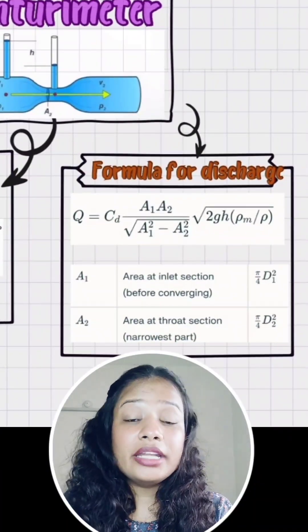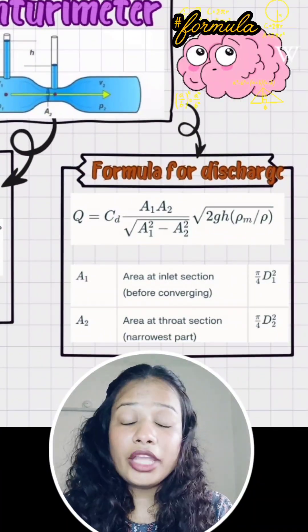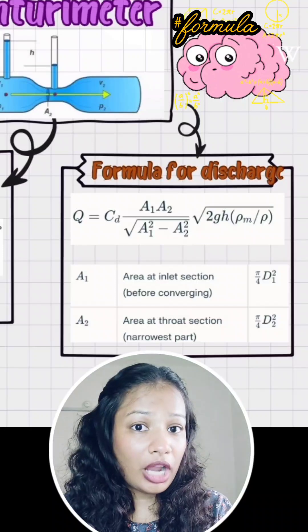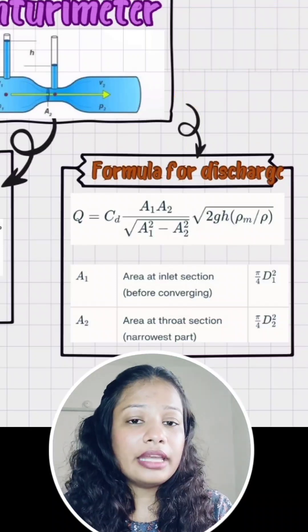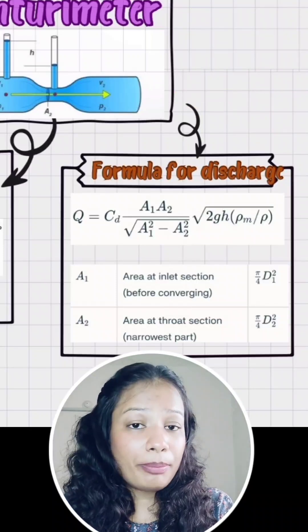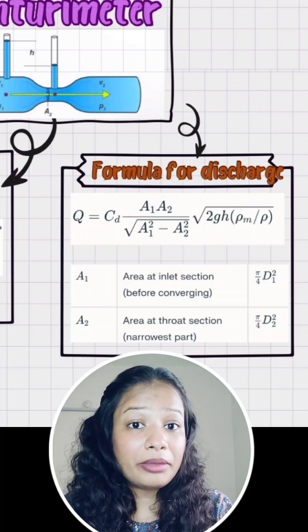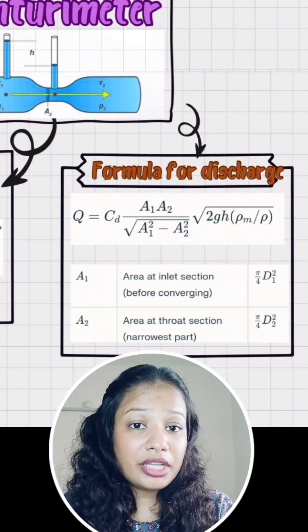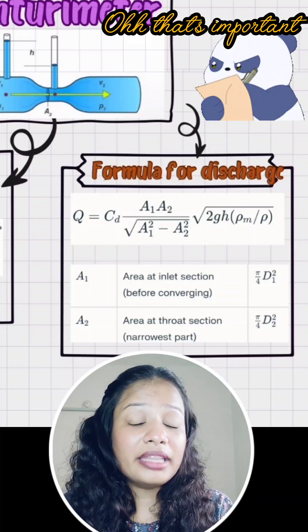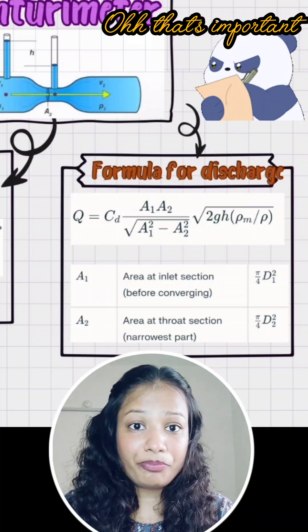Number 3: how to find the discharge through the Venturi Meter using this formula. As you can see in the formula, it depends on the area of the pipe as well as the area of the throat. That means the size of the Venturi Meter is determined by the pipe's diameter and the throat's diameter.